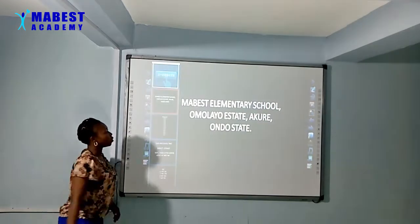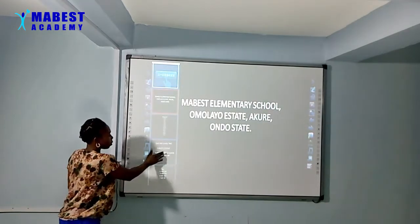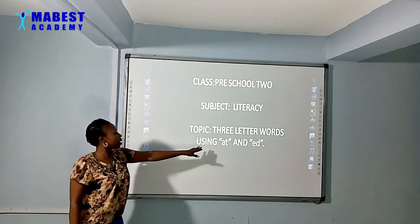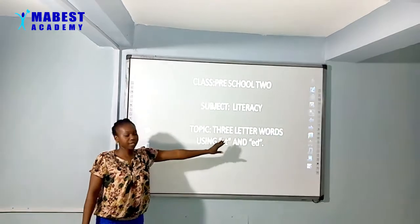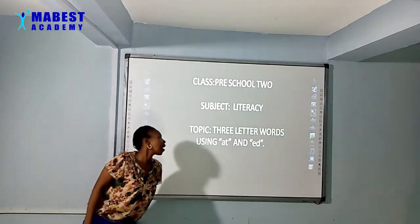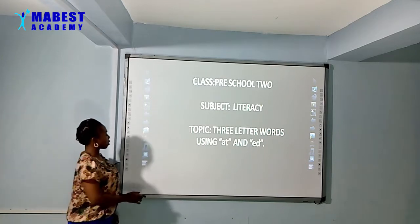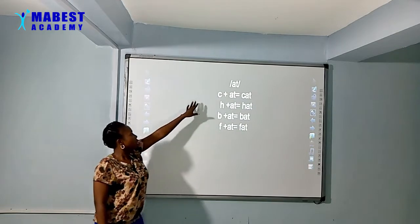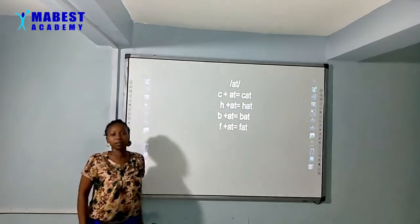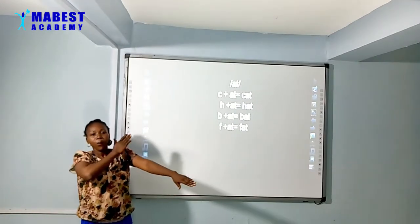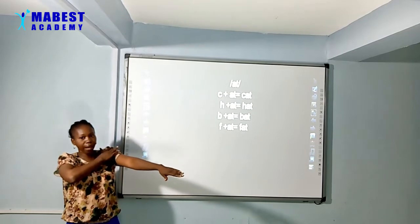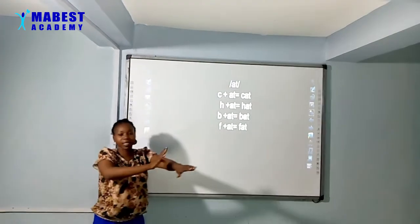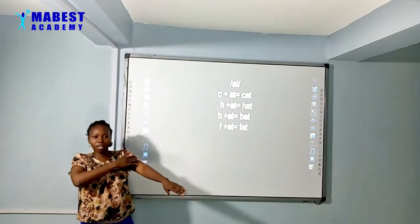I've said earlier that we'll be looking into three letter words, using a T at and a D at. Now we'll look at some words with at. For instance, you have kuh, kuh, kuh. Please drop kuh up here and put your at down here.